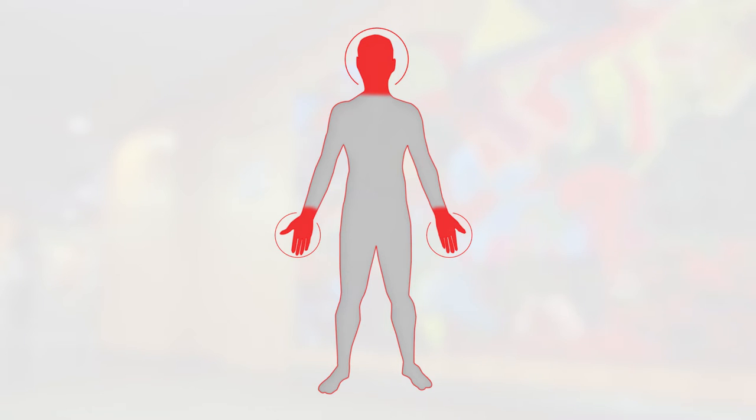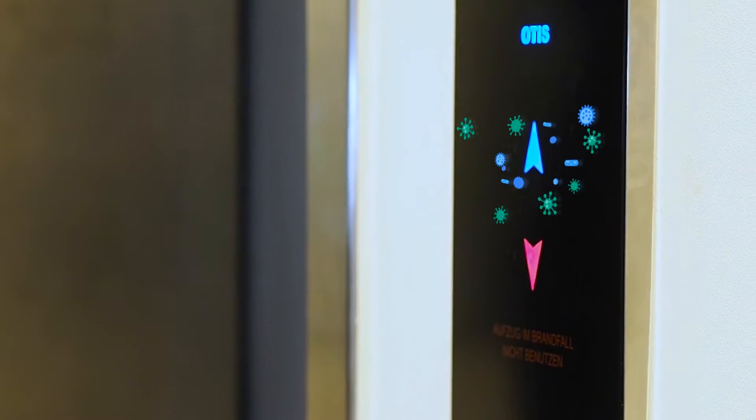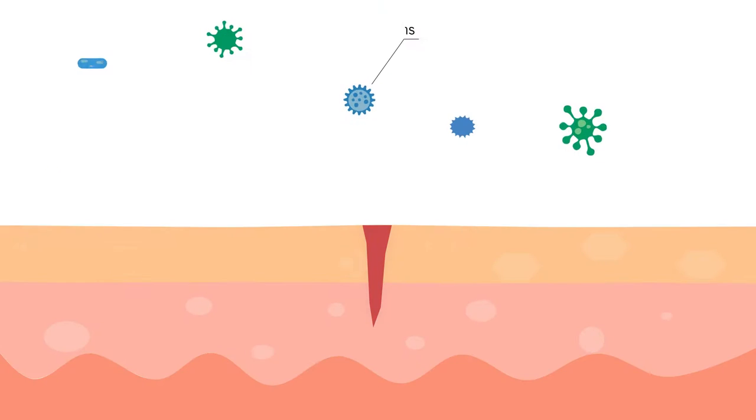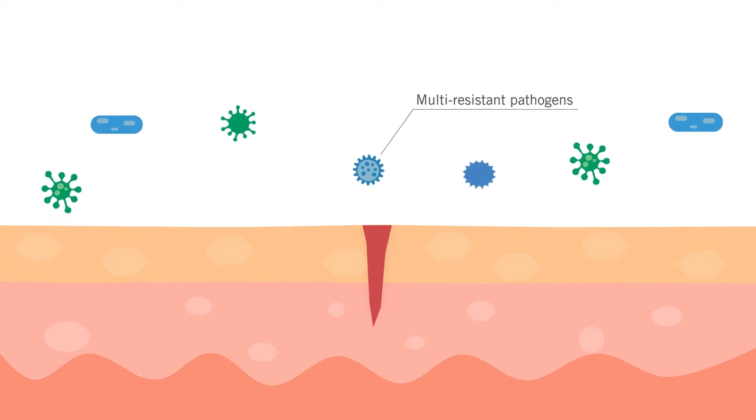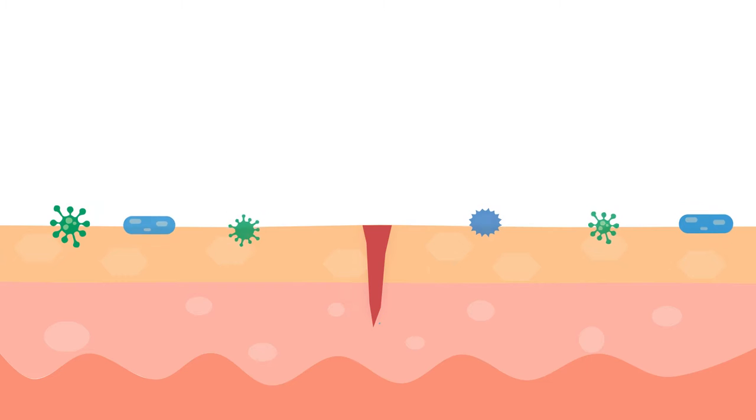For example, a healthy person carries germs on the skin and in the mucous membranes. However, some of these germs are so-called multi-resistant pathogens. If they invade the body, they can cause infections that are more difficult to treat.